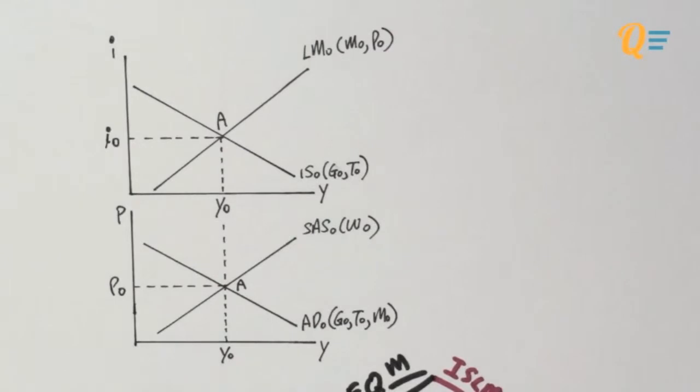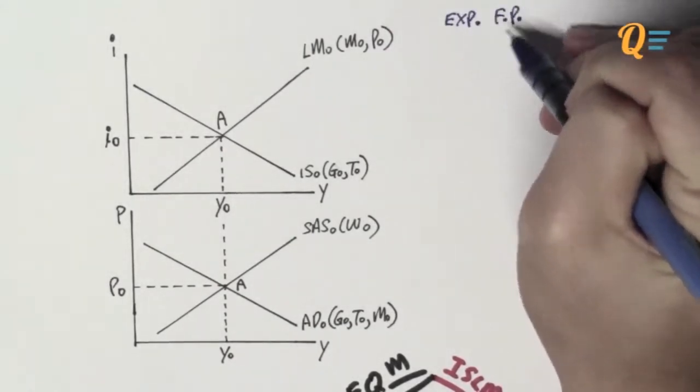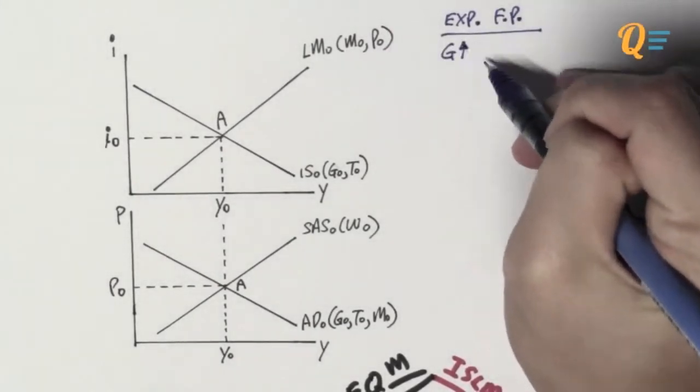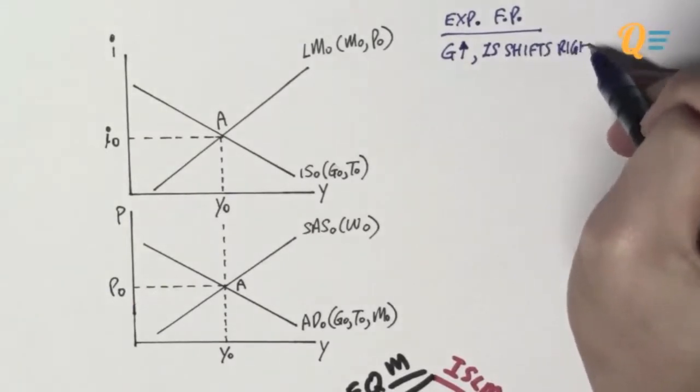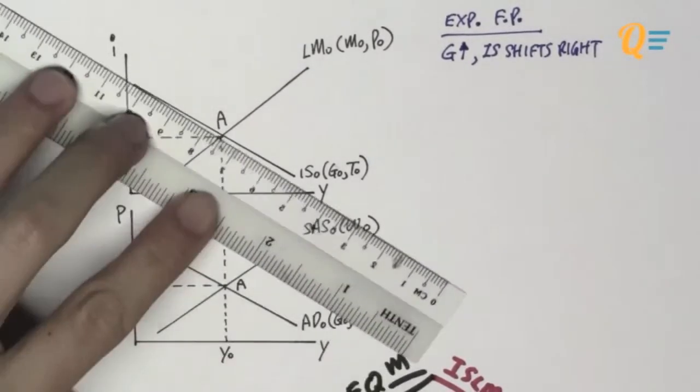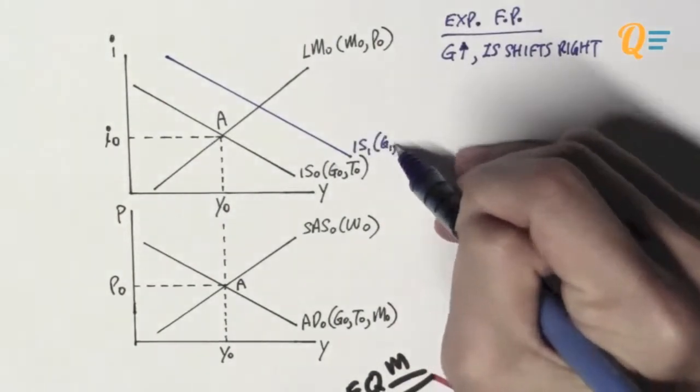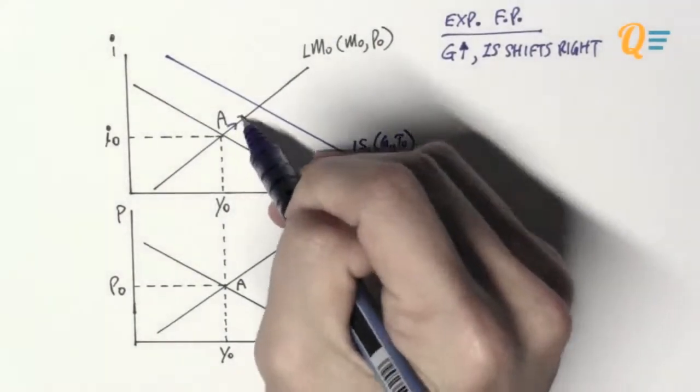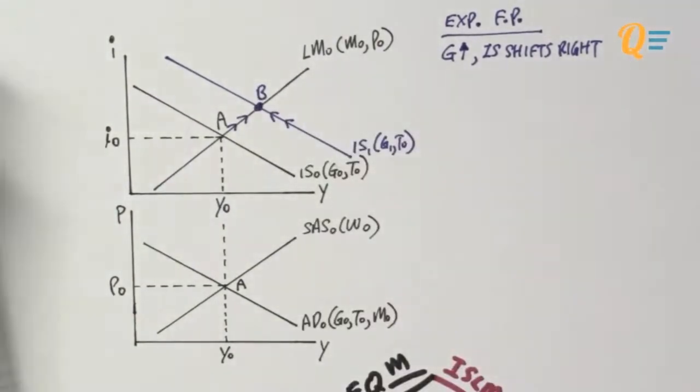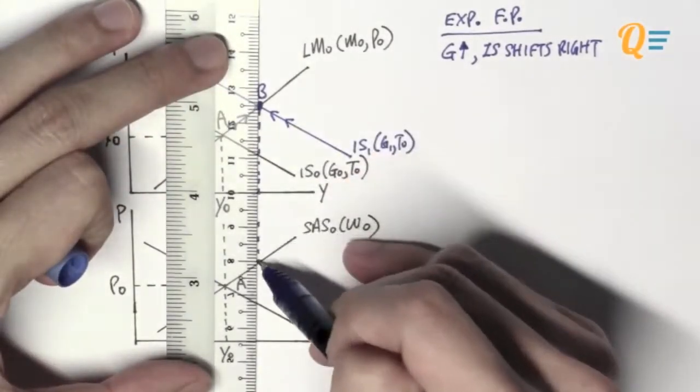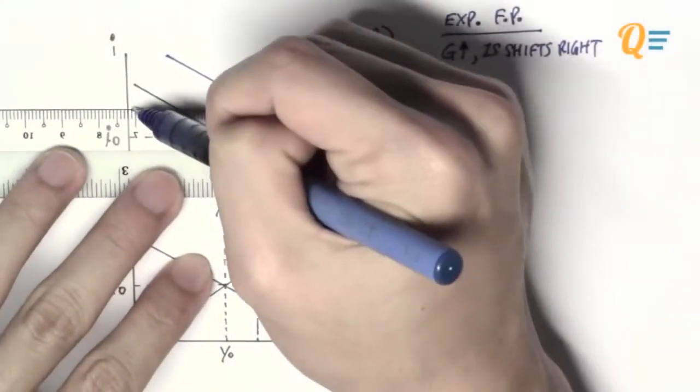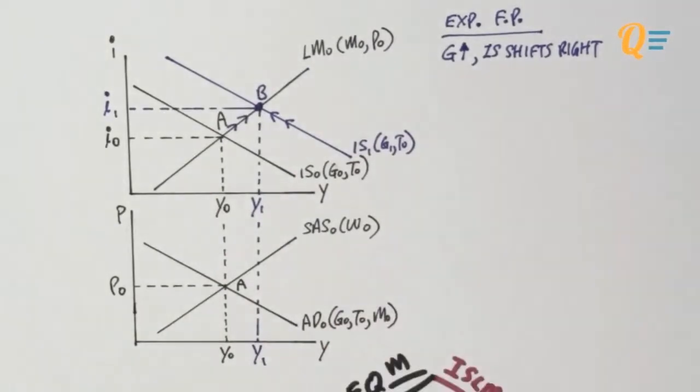So if the initial equilibrium is that simple, are the dynamics that simple? Well, let's take a look at an expansionary fiscal policy where the government spending increases and the IS curve is going to shift to the right. So we have a new IS curve of IS1, G1, T0. After the crowding out effect, we are at point B in the ISLM equilibrium and the output should be Y1.